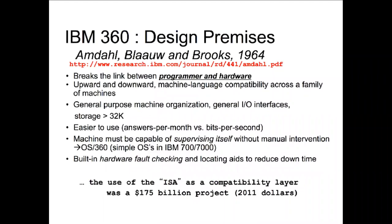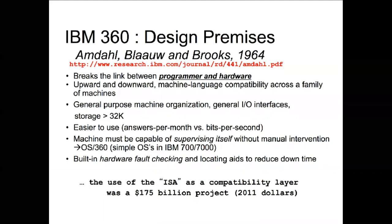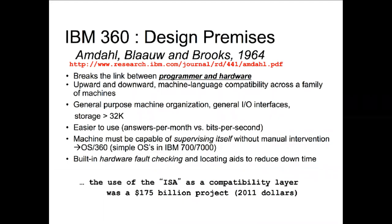So Amdahl, who we'll talk about fairly extensively in the next few lectures, and a few others wrote a paper that basically defined an ISA — an instruction set architecture. This is a compatibility layer, kind of an abstraction that allows the programmer to not have to worry about the implementation of the instructions. And obviously we inherited this — thank goodness. ISAs are pretty core to what we do now.